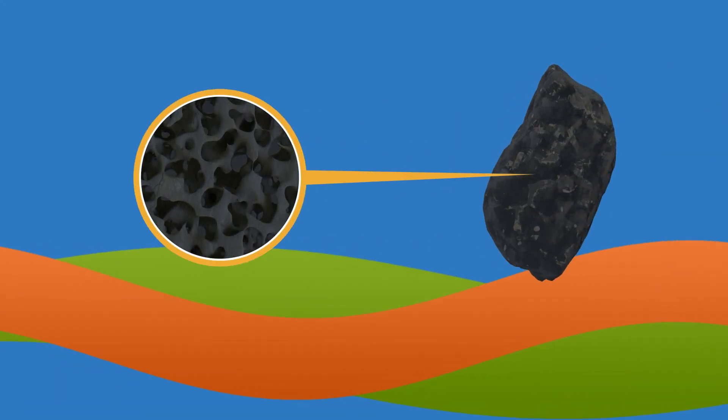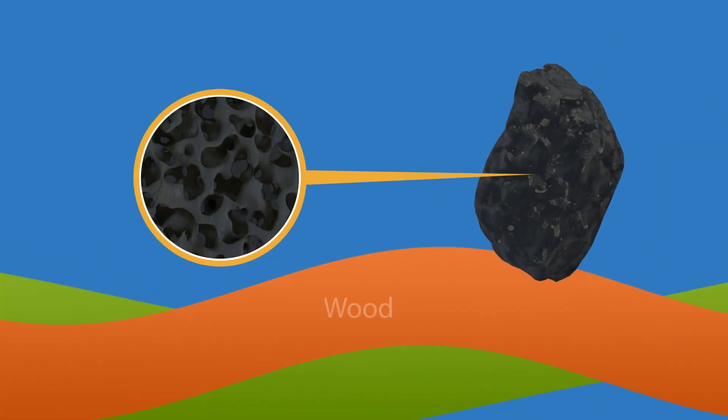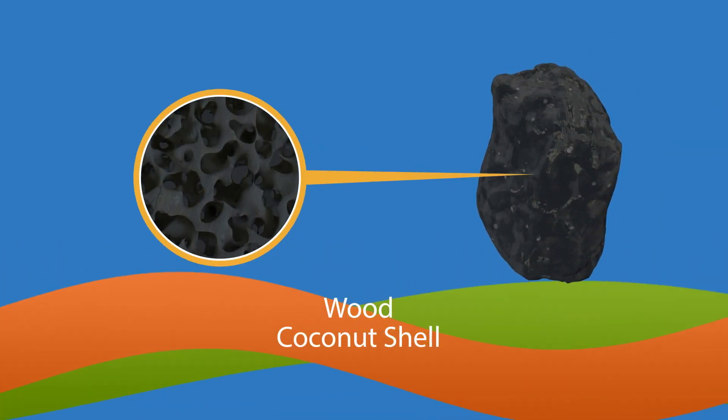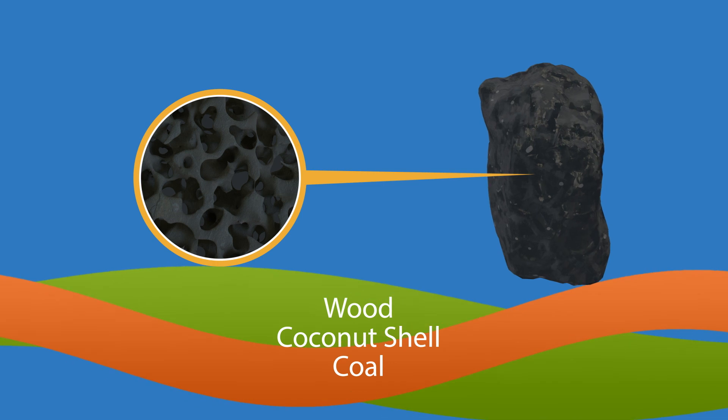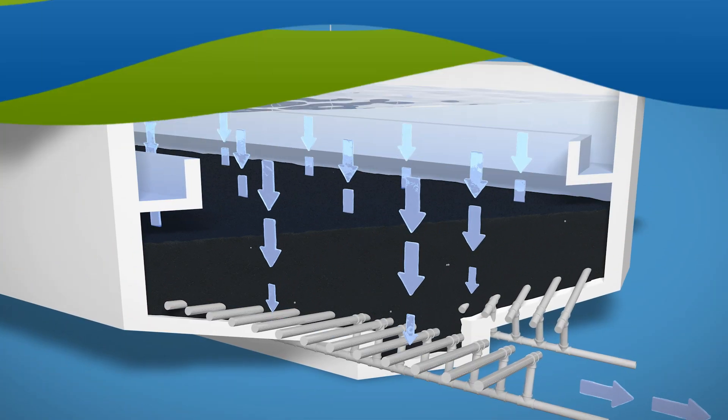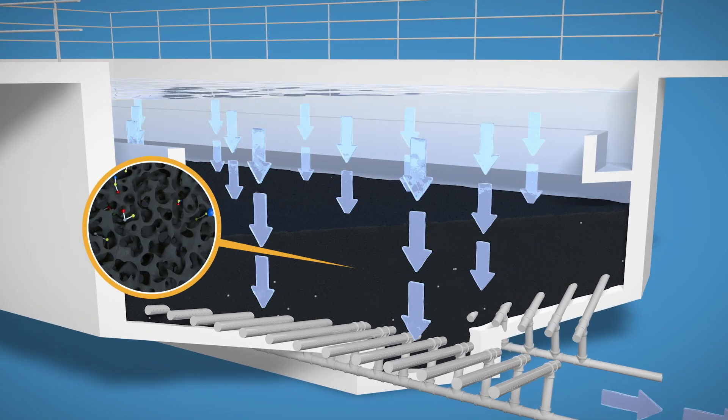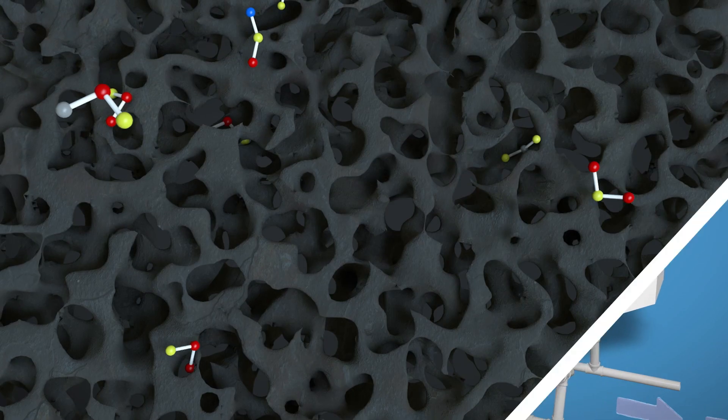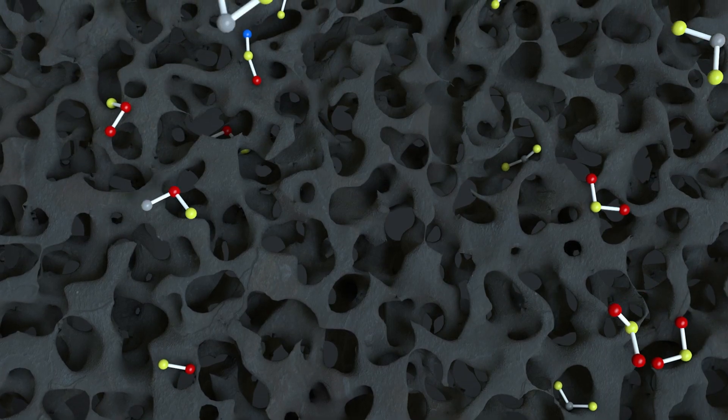Activated carbon is made from organic materials such as wood, coconut shell, or coal. It is highly porous, which creates a large surface area to which compounds can absorb. As the water passes through the carbon, any remaining organic materials absorb to the GAC.